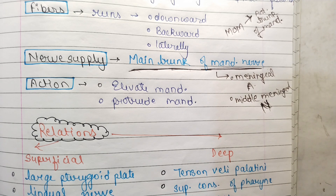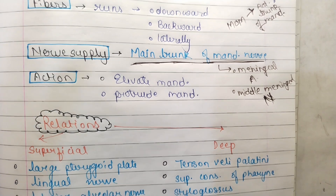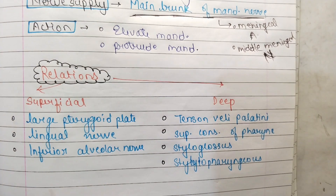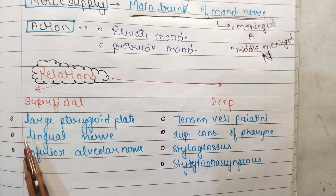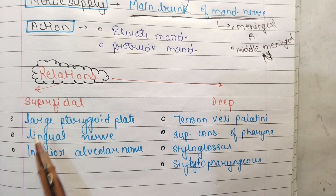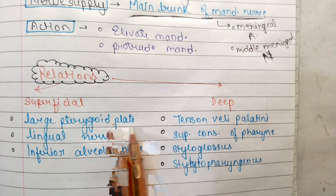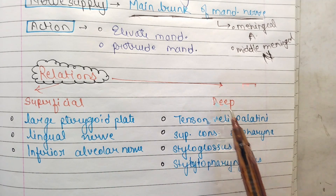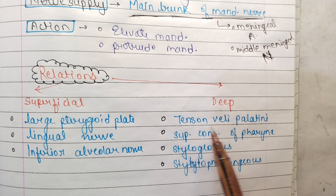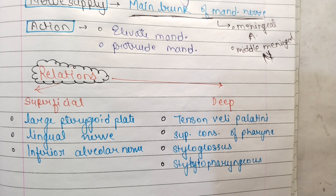Coming to the action — it elevates the mandible and protrudes the mandible. Regarding its relations, superficially it is related to the lateral pterygoid plate, lingual nerve, and inferior alveolar nerve. Deeply, it is related to the tensor veli palatini, superior constrictor of the pharynx, and stylopharyngeus.